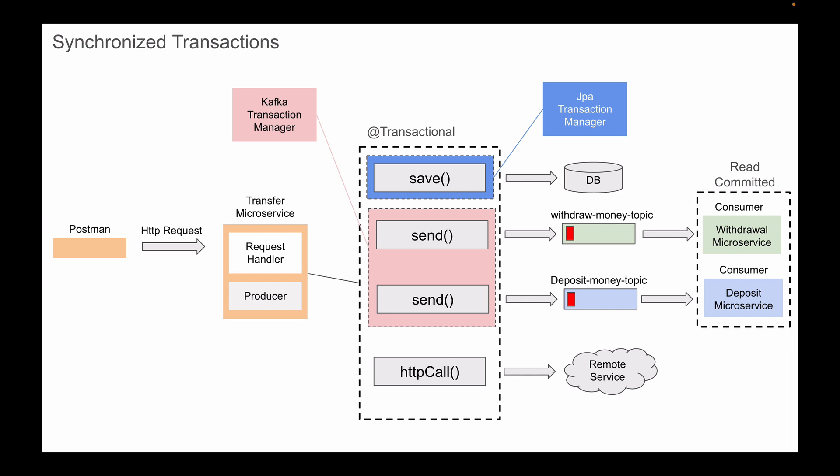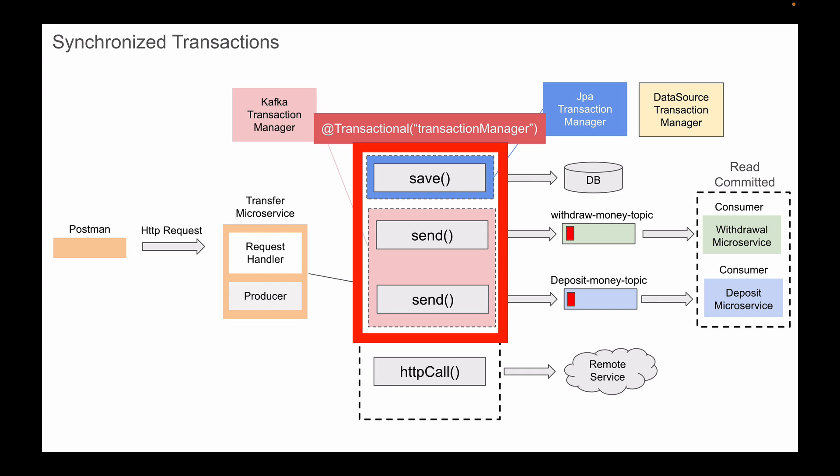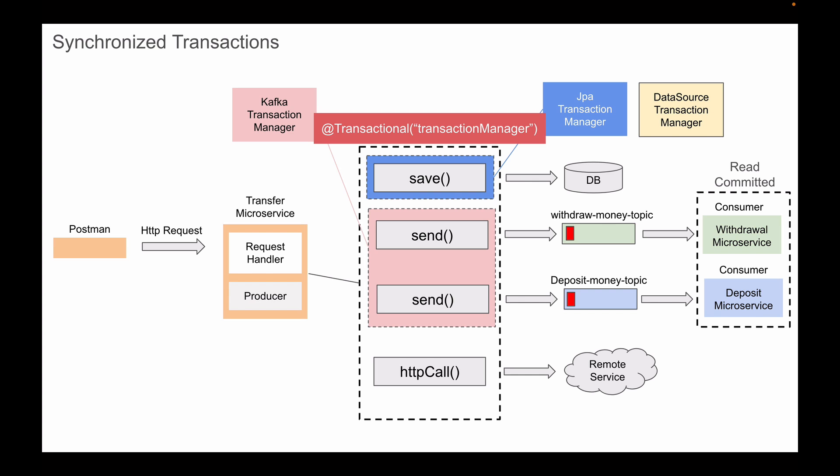The Kafka transaction manager will manage Kafka transactions, and the JPA transaction manager will be used to manage database transactions. When we want to send records to Kafka and perform database operations in the same method, we can use the transactional annotation with normal Spring transaction management — this can be the JPA transaction manager or the data source transaction manager, for example. And even though we have Kafka operations and database operations in the same method, they can still participate in the same transaction. This works because the Spring framework has a component called the transaction interceptor, which manages the behavior of methods annotated with the transactional annotation.